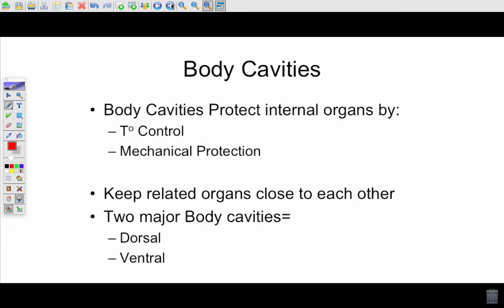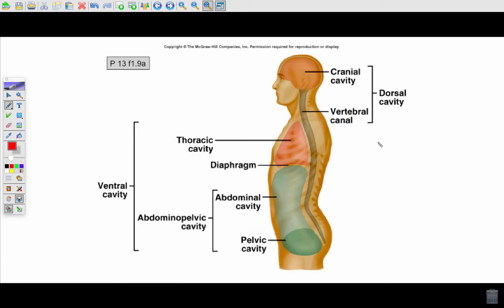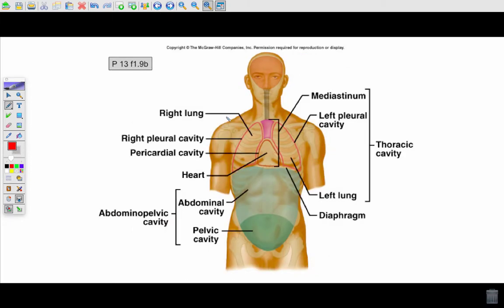Two major body cavities: the dorsal and the ventral. The ventral body cavity is made up of the thoracic and the abdominopelvic. Notice the spelling abdominopelvic. The thoracic and abdominopelvic cavities are separated by the diaphragm. The abdominopelvic cavity is then divided up into the abdominal cavity and the pelvic cavity. The dorsal cavity has two sub-cavities: the cranial cavity and the vertebral canal. Vertebral canal is where your spinal cord lies.